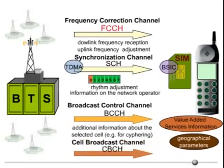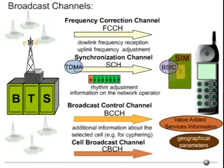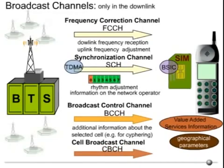The FCCH, SCH, BCCH, and CBCH are broadcast channels and exist only in the downlink. They are the first logical channels belonging to the common channels.